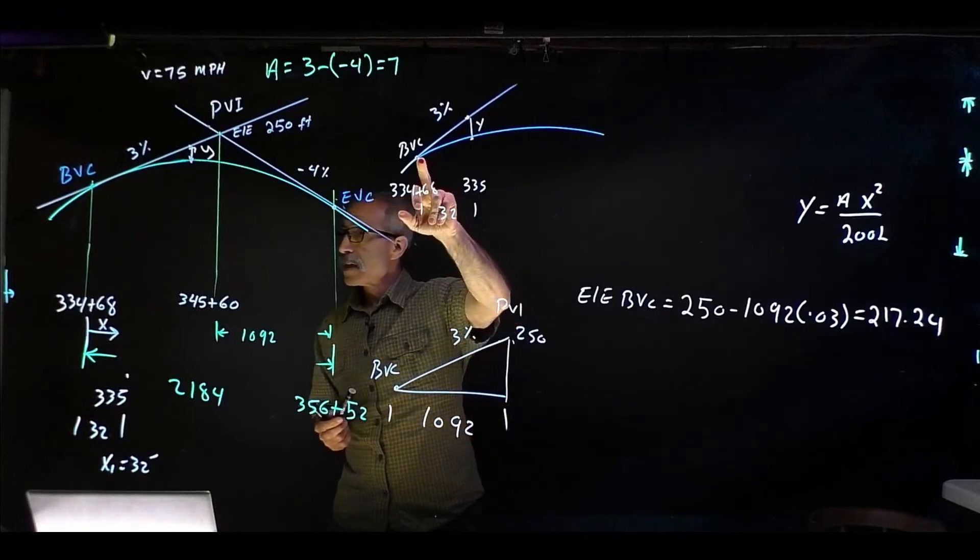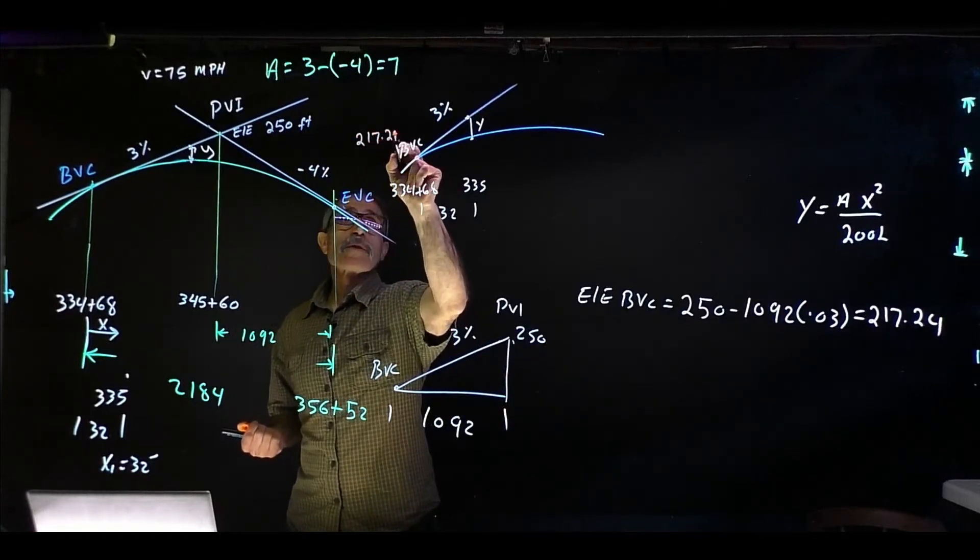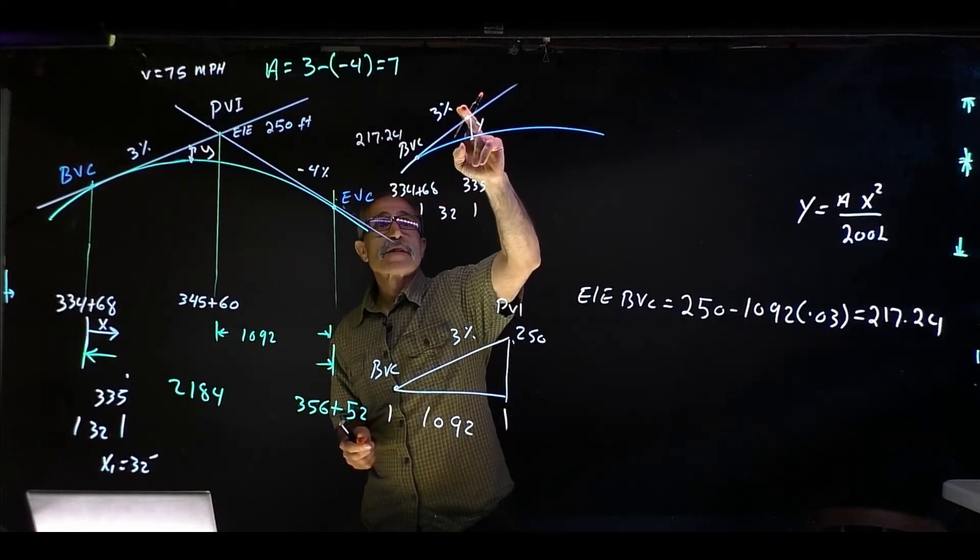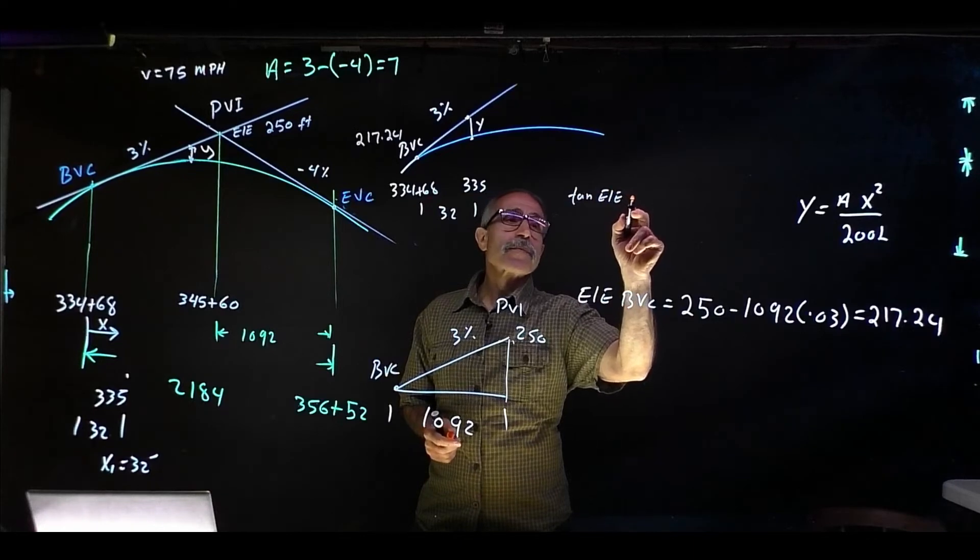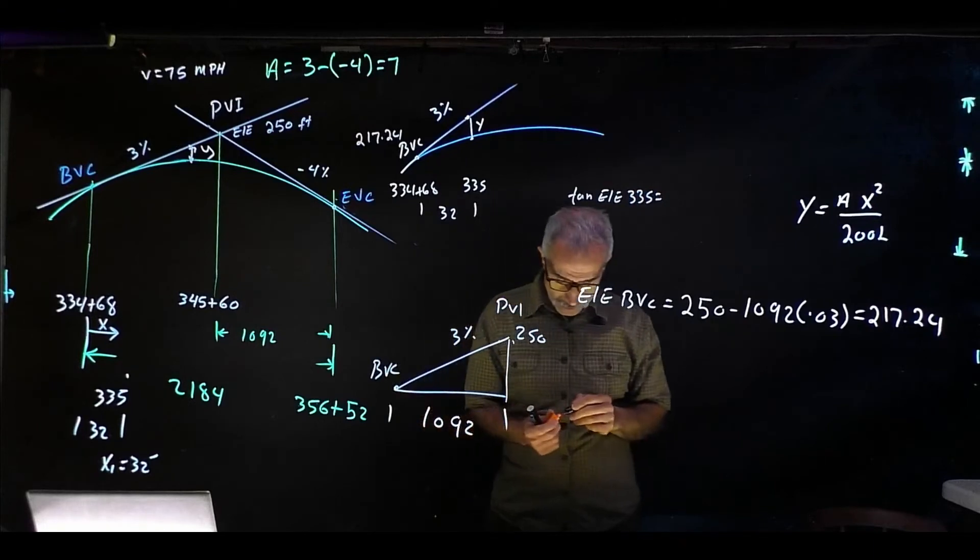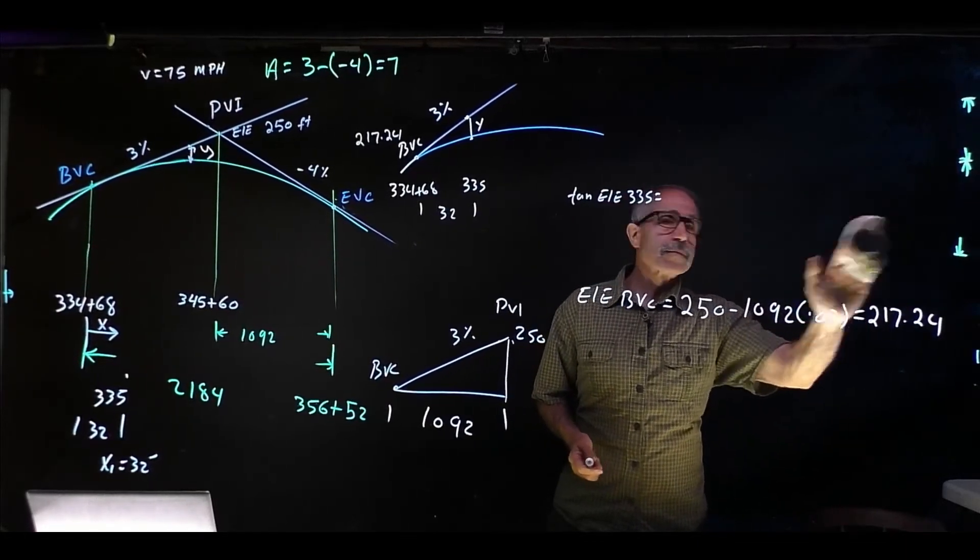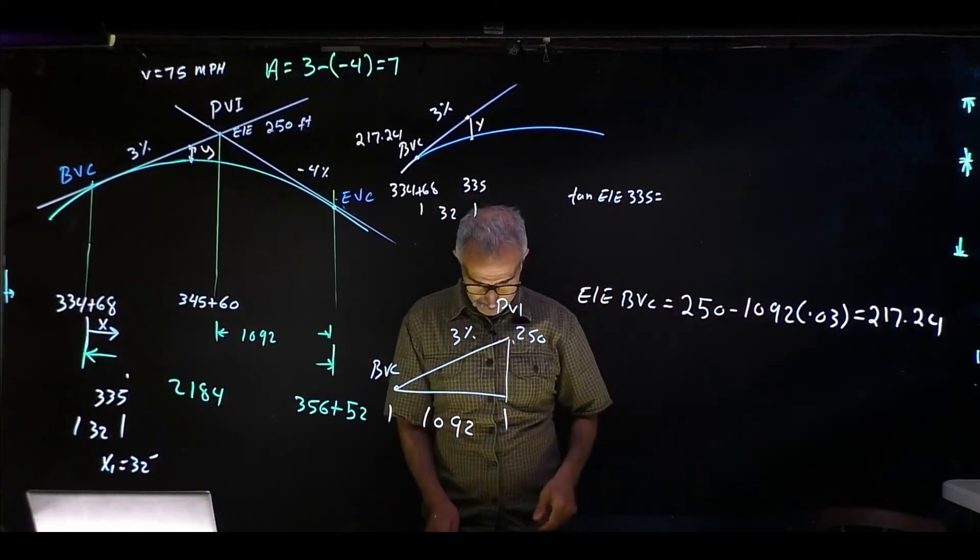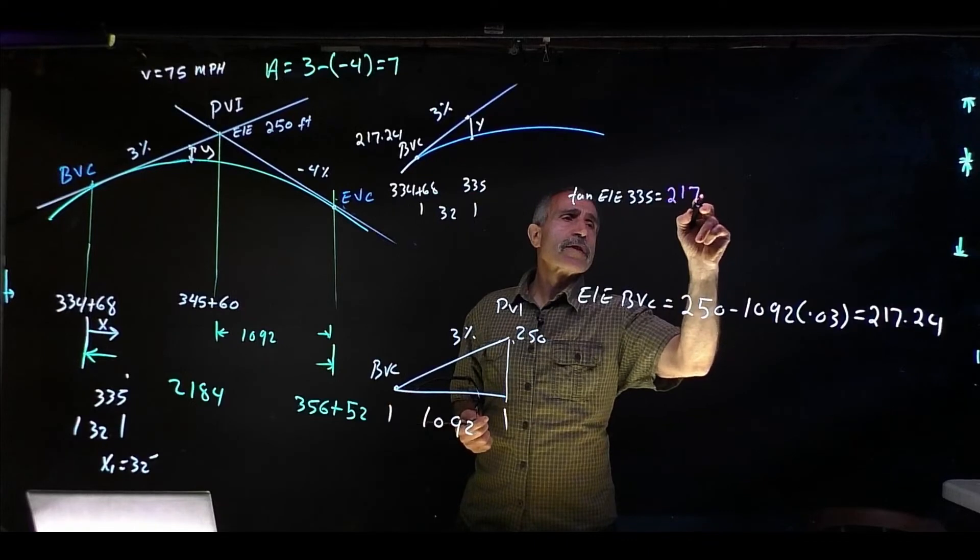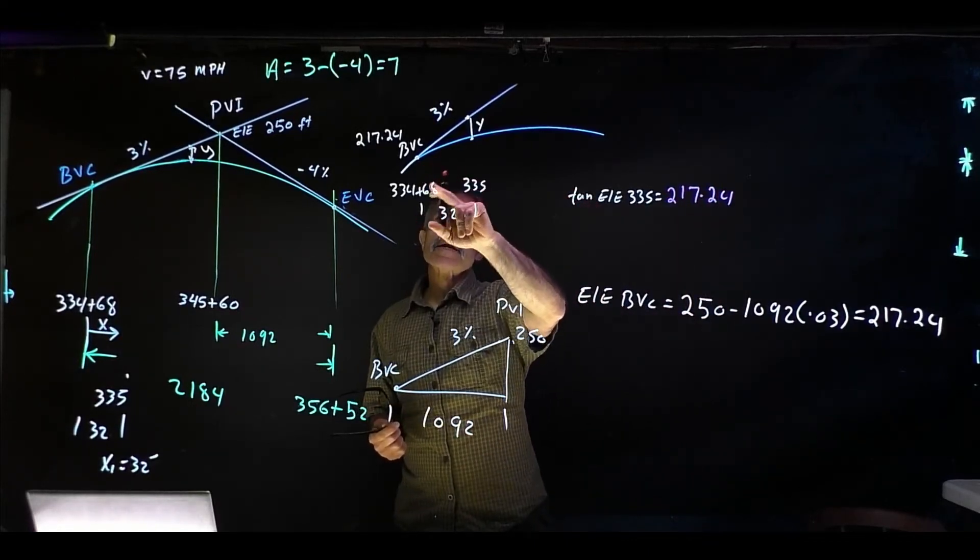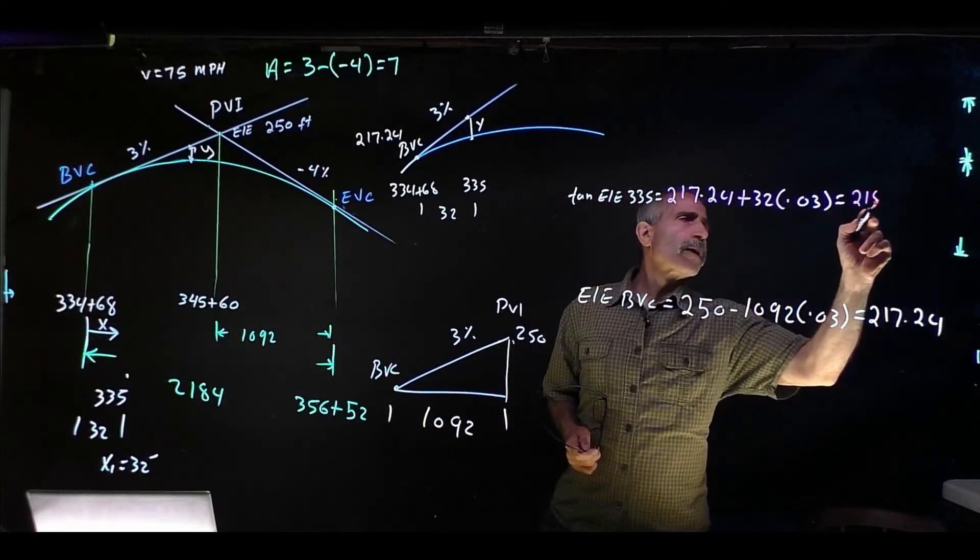So continue. Because we know the grade right here came out to be 217.24. And that distance is 32, so the tangent elevation at this point, at this station, tangent elevation at 335 equals we have 32 distance. We have 217.24, and the grade is going up at 3%, so I'm just moving 32 feet. So that is plus 32 times 0.03, and that's 218.20.